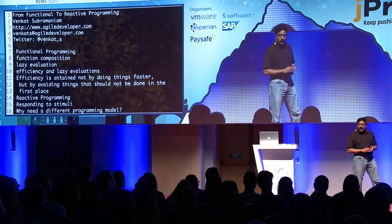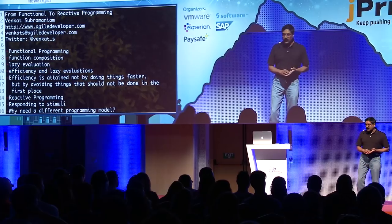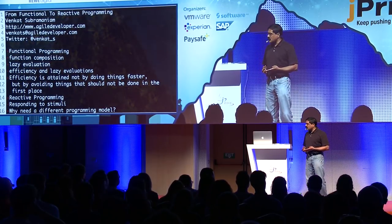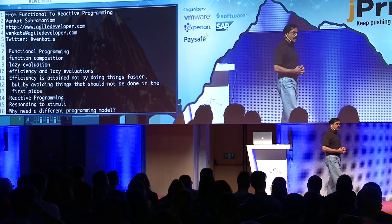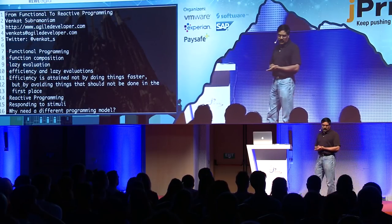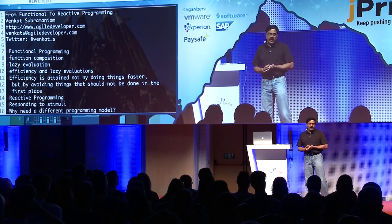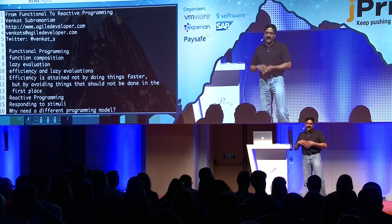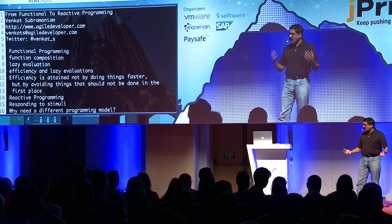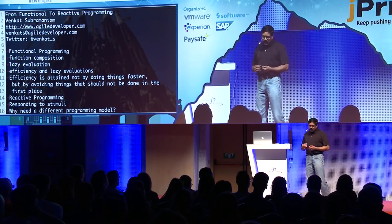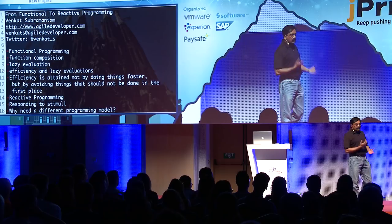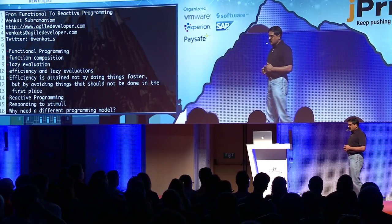My fourth paradigm shift was really learning about asynchronous programming. Coming from decades of programming in C++ and Java, starting to program using Node and JavaScript was really hard — I had to think about asynchrony. My fifth paradigm shift was functional programming, and everyone told me how cool and easy it is. My sixth paradigm shift was reactive programming, and that's what I want to talk about today.